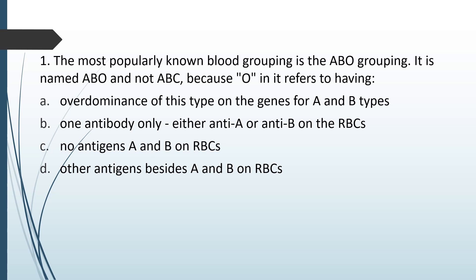The most popularly known blood grouping is the ABO grouping. It is named ABO and not ABC because O in it refers to: having overdominance of this type on the genes for A and B type; one antibody only, either anti-A or anti-B on RBCs; no antigen A or B on RBCs; or other antigens besides A and B on RBCs. So in ABO blood grouping, what does O refer to?